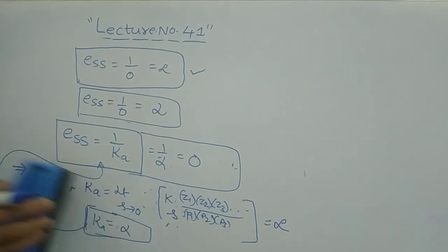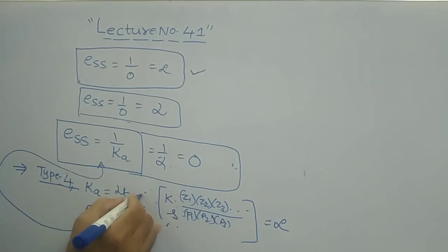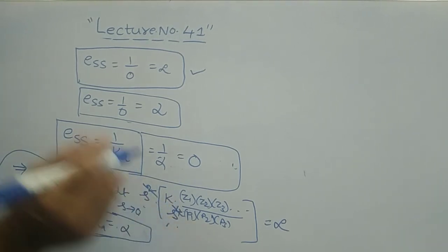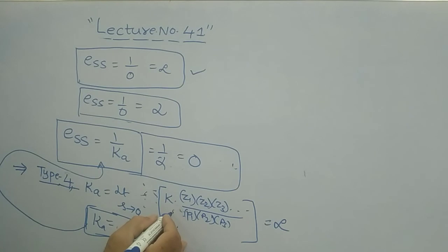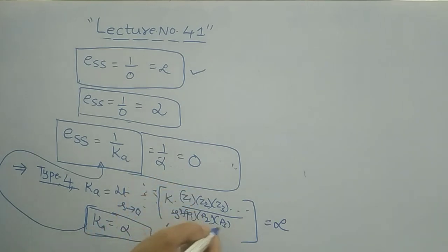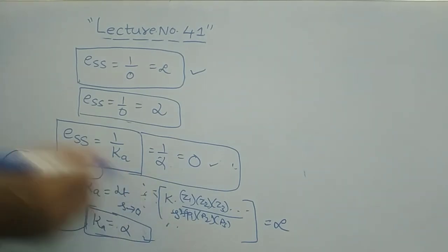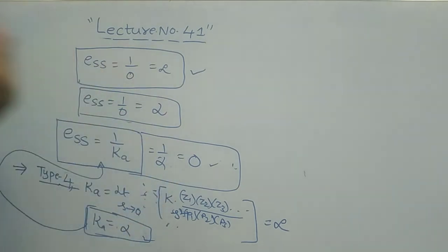Similarly for type 4 system, s power 4 in the denominator means after canceling s squared from the Ka formula, s squared remains. Substituting s equals 0 gives Ka equals infinite, and ESS equals 1/infinity equals 0. Therefore, from type 3 onwards — type 3, 4, 5 and higher — the steady state error with unit parabolic input is 0.